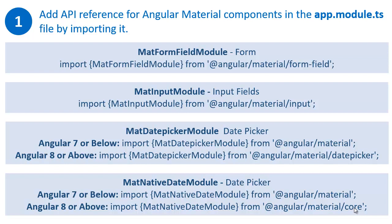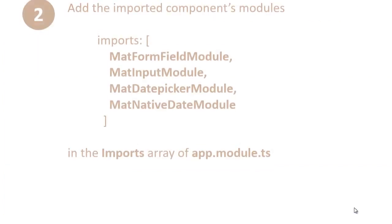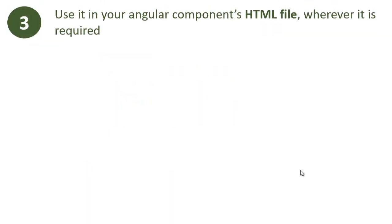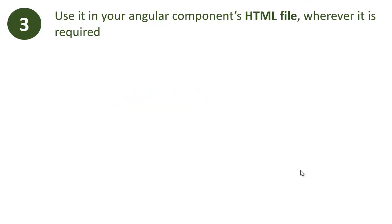These are the four modules which we need to import in the app.module.ts file. The second step is we need to add these four modules in the imports array of app.module.ts. And the third and final step is we need to use the date picker component or UI element wherever we require it in our HTML template file.